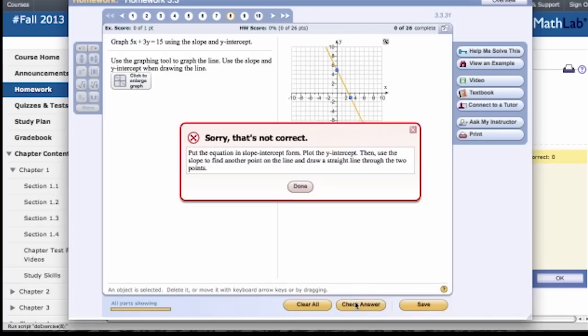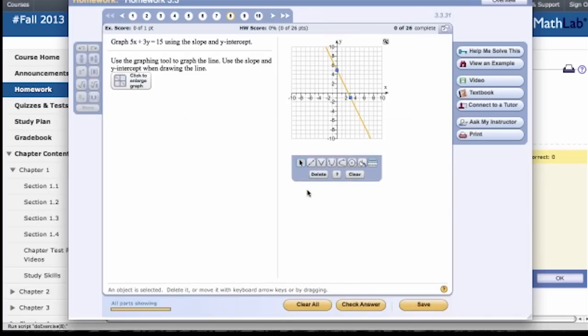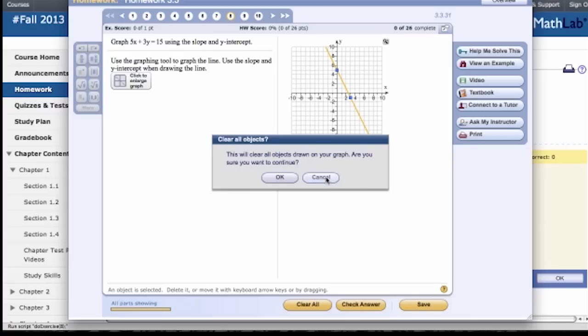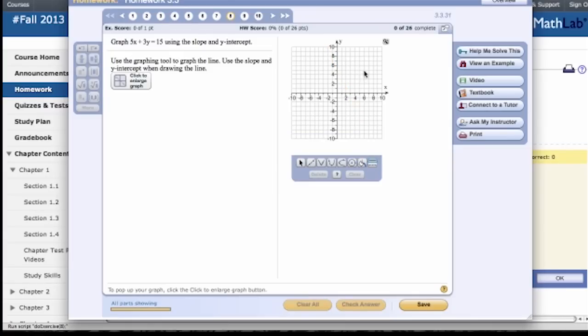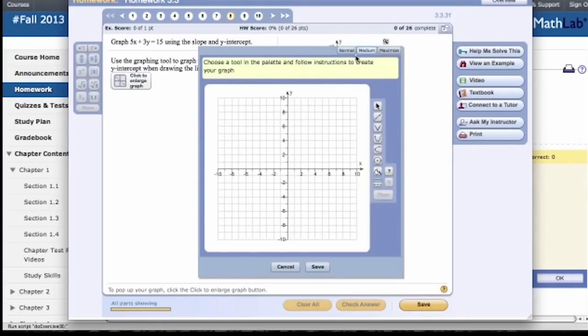So, now I don't want that. I need to clear that answer. Maybe I just can't see it in this small space. So, I clear the answer, and I go up here to this magnifying glass, or you can go here to click to enlarge the graph, and you go over here, and notice it says normal, medium, or maximized. You can actually make the graph much larger.